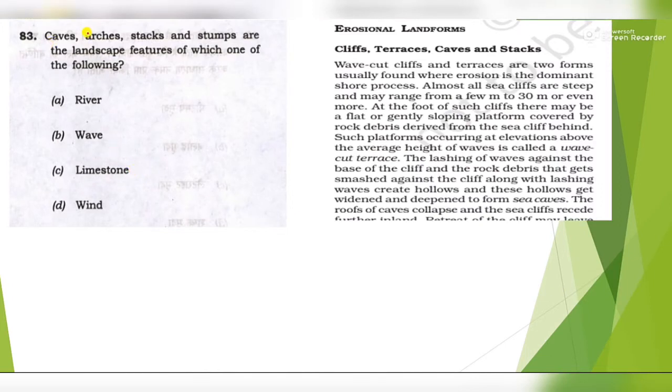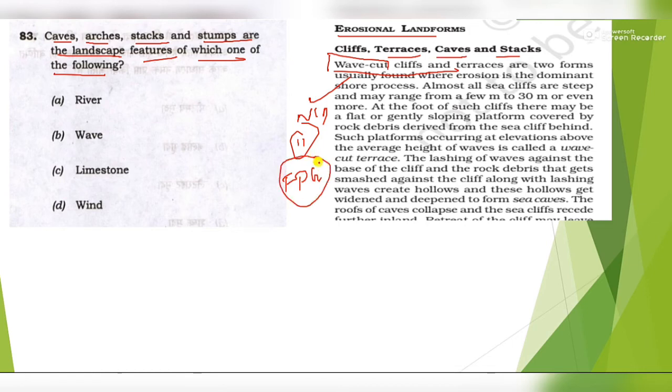Next question: Caves, arches, stacks, stumps are the landscape features of which of the following? Again from the chapter Landforms, you can see here erosional landforms: terraces, caves, stacks, wave-cut cliffs and terraces. That means wave is the component here which will erode these surfaces and form caves, arches, and stack stumps. This is directly given in NCERT Class 11, Fundamentals of Physical Geography. Answer is option B, wave.